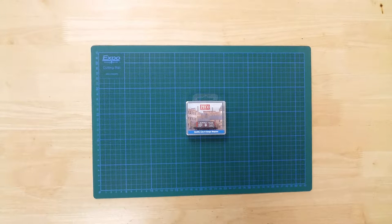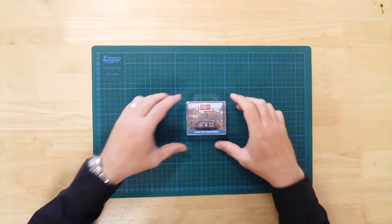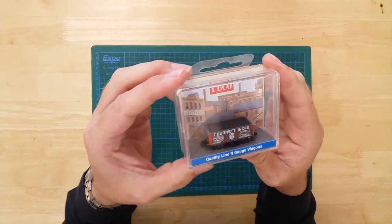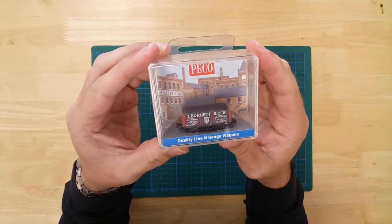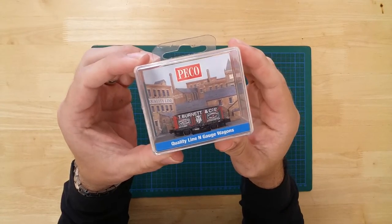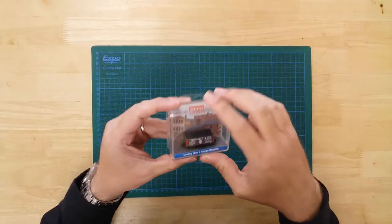This is a model of a 7-plank wagon, owned by the T. Burnett Wagon Hire Company, in N-Gage from Pico. The model comes ready to run and fully detailed.